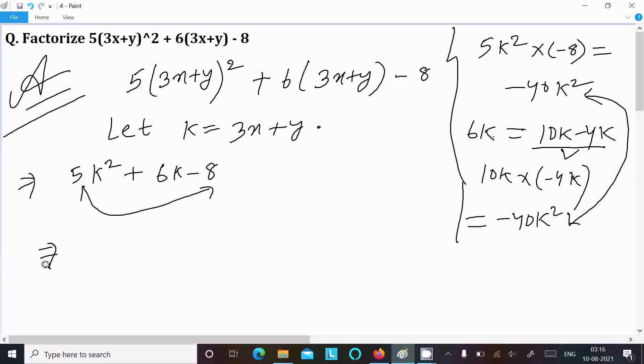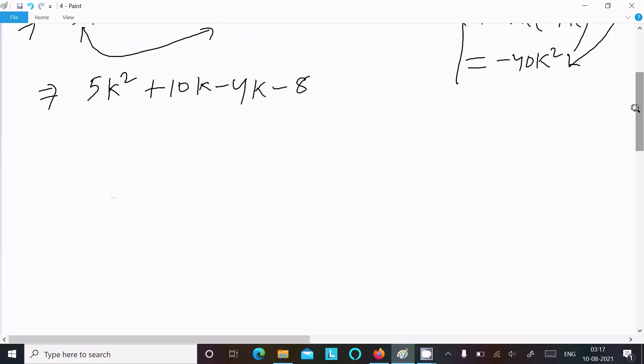So these two are the same: -40k², -40k². So this satisfies the condition. In place of 6k going to 10k, so here we can write 5k² + 10k - 4k - 8. Now take the common between these two, so 5k is the common, so it comes k + 2. And here -4 is the common, so it comes k + 2.